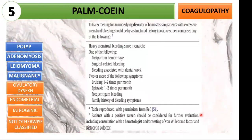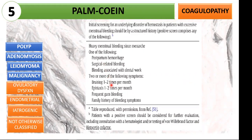We are done with structural causes of AUB. Let's proceed to non-structural causes. First is AUB-C: coagulopathy. What I want you to focus on is that there are positive screen conditions for underlying disorder of hemostasis. The most common disorder of hemostasis diagnosed in those with heavy menstrual bleeding is mild von Willebrand disease, which is a problem of the clotting mechanism in the body.